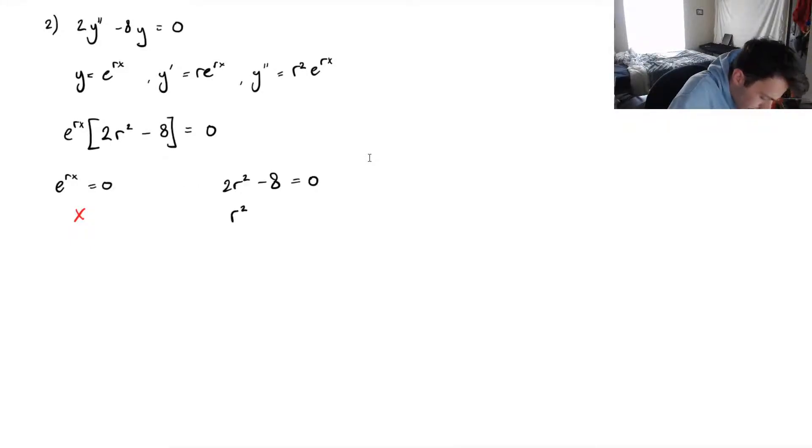So, what will this give us? We've got r squared equals 8 over 2, which is 4, so r1 will be plus 2, r2 will be minus 2. And this is super easy. Super easy one.